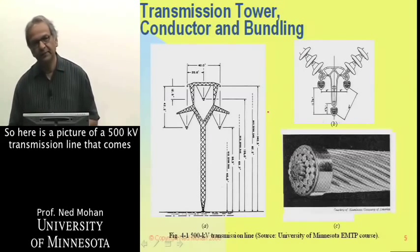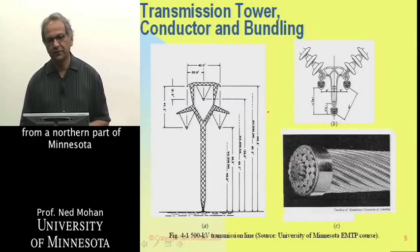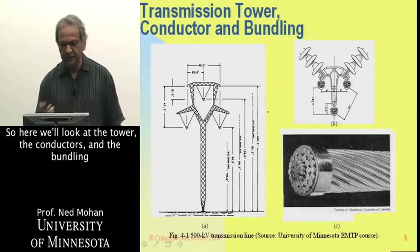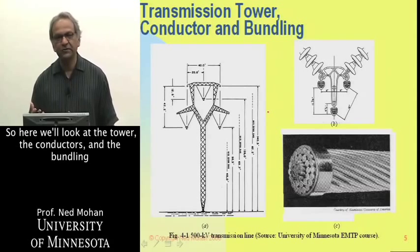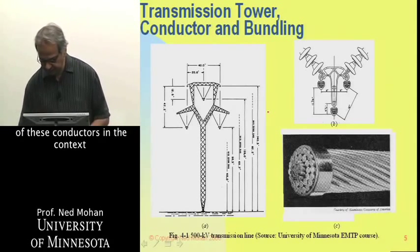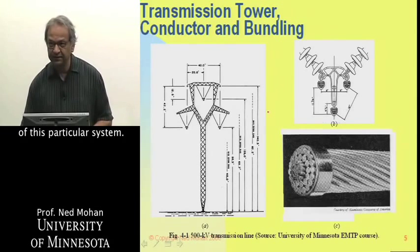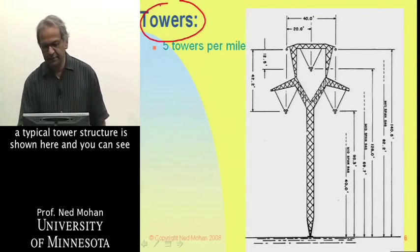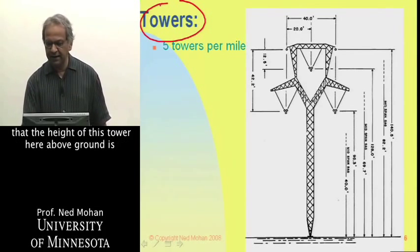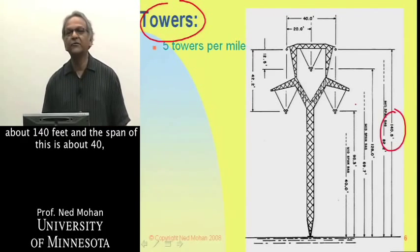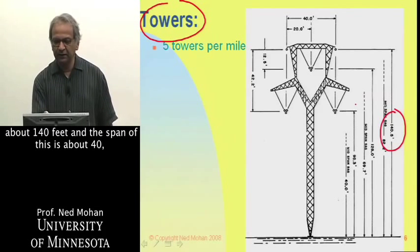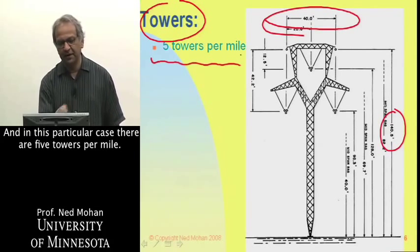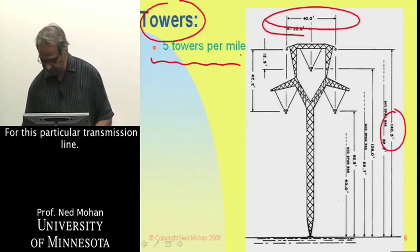Here is a picture of a 500 kV transmission line that runs from the northern part of Minnesota to somewhere very close to the Twin Cities. We look at the tower, the conductors, and the bundling of these conductors. A typical tower structure shows that the height above ground is about 140 feet, and the span is about 40 to 50 feet, with five towers per mile for this particular transmission line.